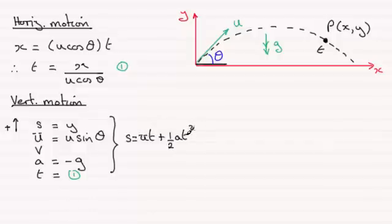So filling in our values here for s, we've therefore got y equals u sine theta. And that's multiplied by the t, which we've seen in one is this. So we'll just put that in brackets there. And it's multiplied then with x divided by u cosine of theta.